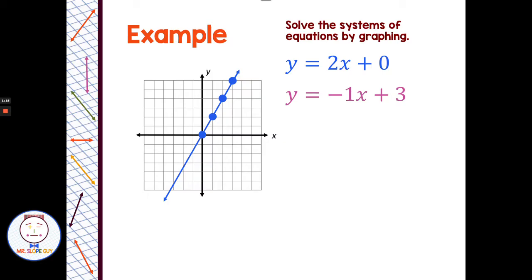And let's graph y equals negative 1x plus 3, y-intercept at positive 3. And my slope is negative 1, or negative 1 over 1. I can go down 1, right 1, down 1, right 1, or up 1, left 1. Either way, it's going to make this pink line.